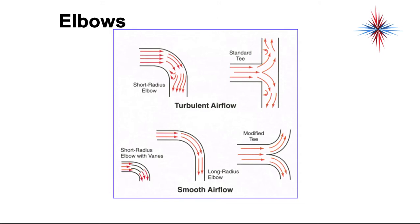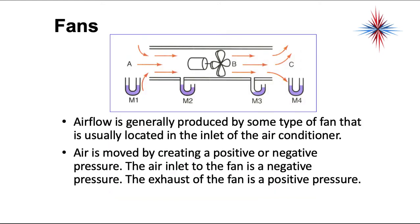Airflow is generally produced by some type of fan that is usually located in the inlet of an air conditioner. Air is moved by creating a positive or negative pressure. The air inlet to the fan is a negative pressure. The exhaust out of the fan is a positive pressure. In the picture above we have some little U-tube manometers here. Everything in the open space, pressures are equal.